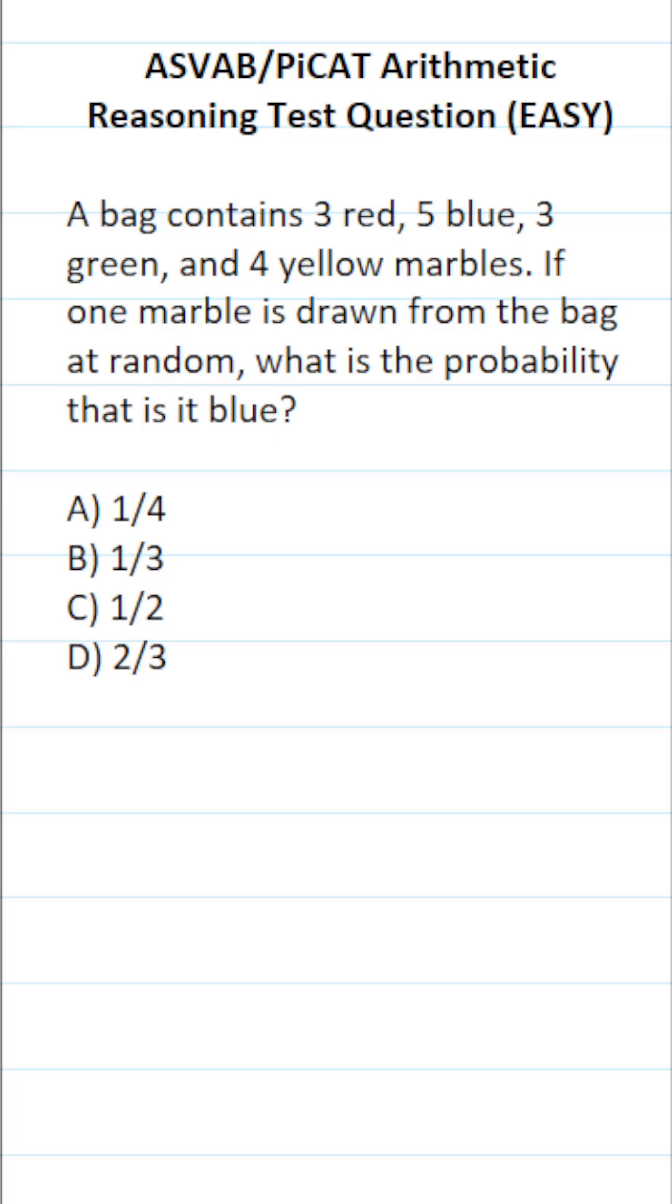This arithmetic reasoning practice test question for the ASVAB and PiCAT says, a bag contains three red, five blue, three green, and four yellow marbles. If one marble is drawn from the bag at random, what is the probability that it is blue?